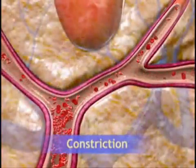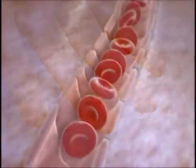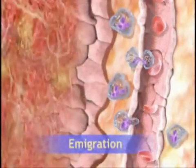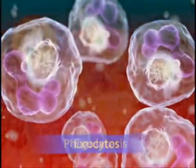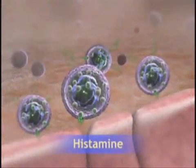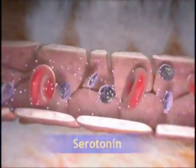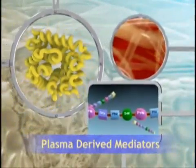Acute inflammation comprises a variety of complex protective responses to injury that, together, lay the groundwork for the next stages of the body's recovery: immune response and tissue repair.